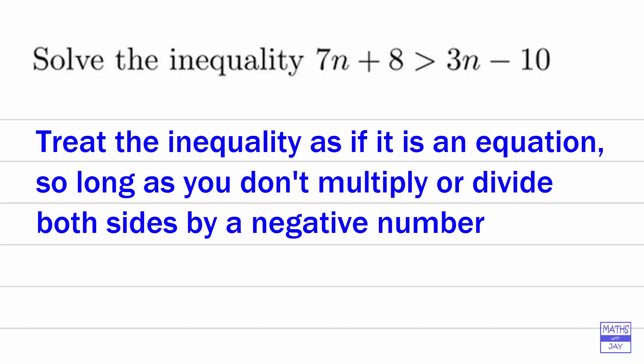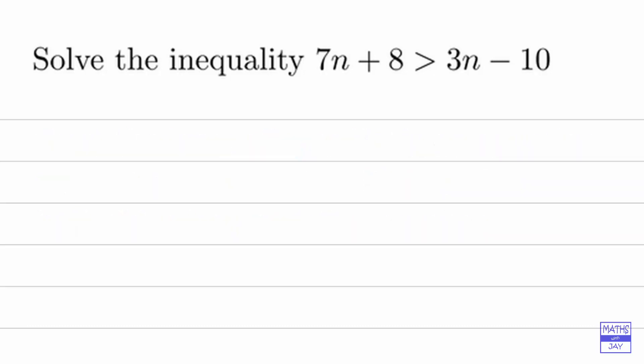So long as you don't divide or multiply by a negative number, then that's all fine, and so long as you don't swap the sides of the inequality. So that means that we would be thinking of making sure that we get both n's on the left-hand side without having to divide by a negative. So that means the first thing we're going to do is subtract 3n from both sides.